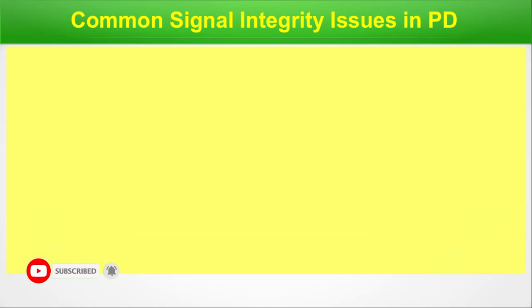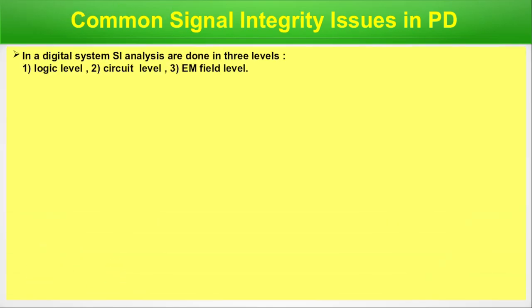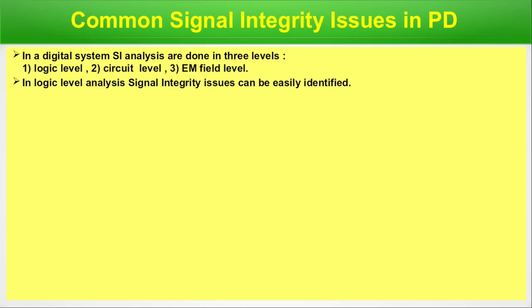Common signal integrity issues in PD: In a digital system, signal integrity analysis is done at three levels — first, logic level; second, circuit level; third, EM field level, that is electromagnetic field level. At logic level analysis, signal integrity issues can be easily identified.